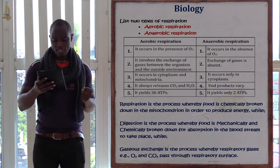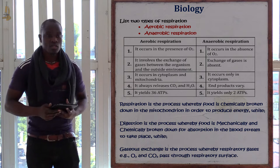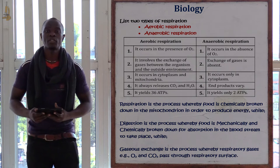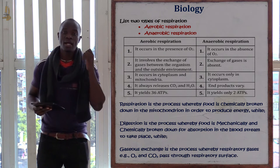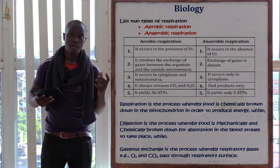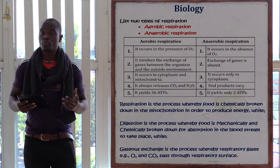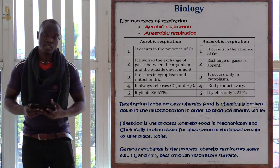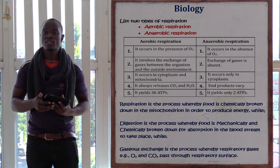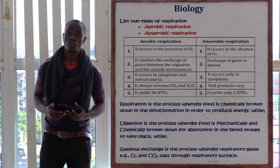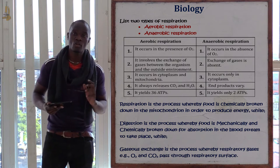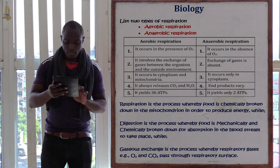The next question asks: list the two types of respiration. We have aerobic respiration and anaerobic respiration. Aerobic respiration is a type of respiration whereby the organism must use oxygen in order to produce energy. Anaerobic respiration is whereby organisms do not need oxygen in order to produce energy — for example, some bacteria and protozoa. Respiration mainly takes place in two processes: glycolysis and the Krebs cycle.